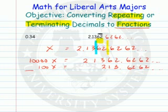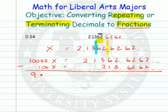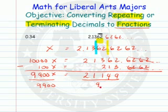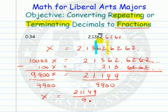You may see now what's going to happen. If we subtract these two equations, we get 9,900x on the left. The repeating decimal part goes away, and we're left with 9,411 — wait, 21,149. So 9,900x equals 21,149. If we divide both sides by 9,900, we get x equal to the fraction that is equal to this repeating number.